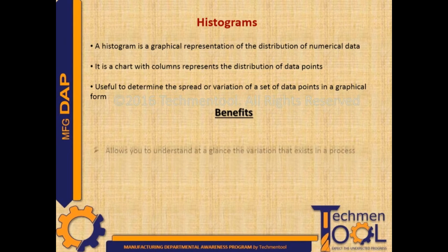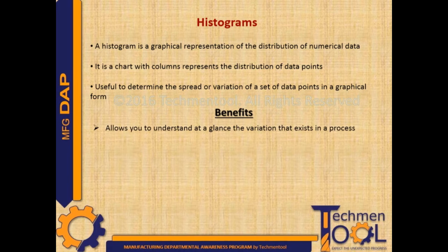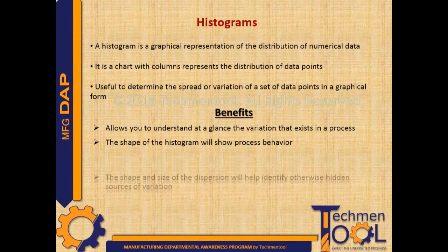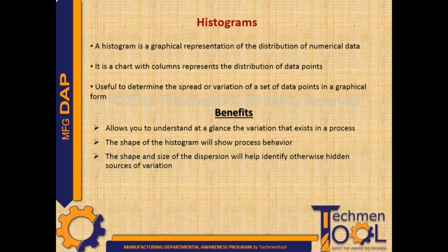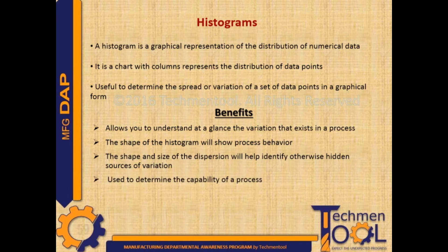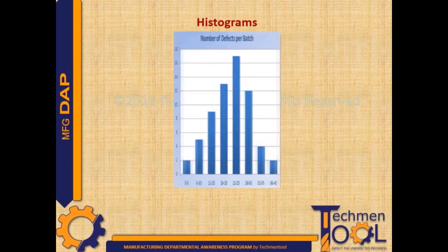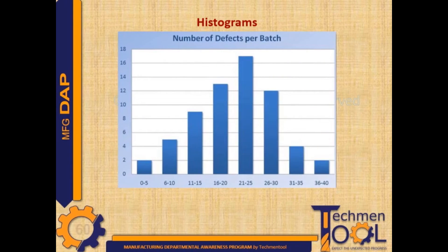Benefits of histograms include: allowing you to understand at a glance the variation that exists in a process, the shape of the histogram showing process behavior, the shape and size of the dispersion helping identify otherwise hidden sources of variation, and being useful to determine the capacity of a process. This is the sample construction of a histogram.